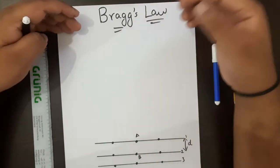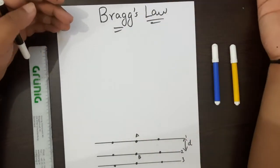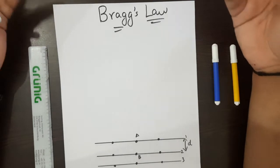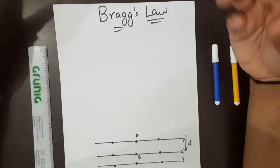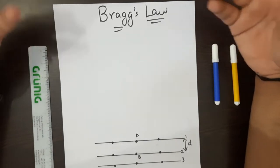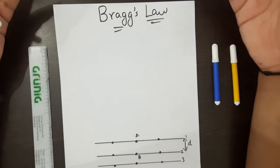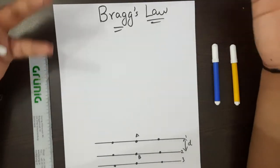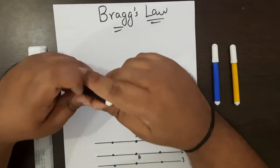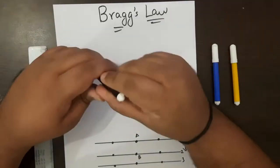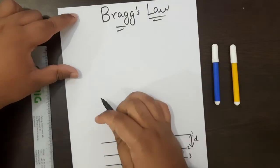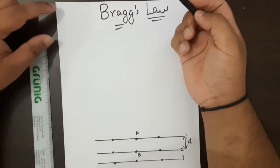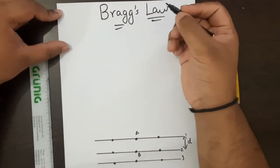Bragg's Law was given by a father-son duo, and it basically described the reasons why constructive and destructive interference occurs when a wave of light gets scattered. They had given two conditions. I will first describe what destructive and constructive interference is.